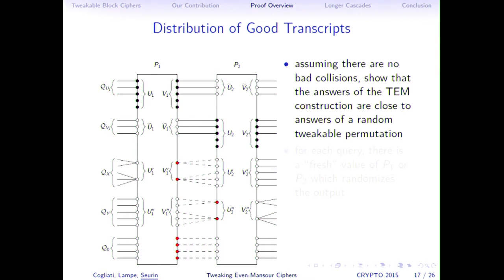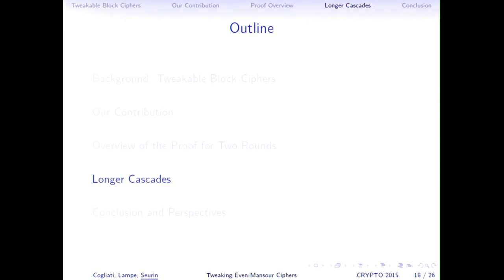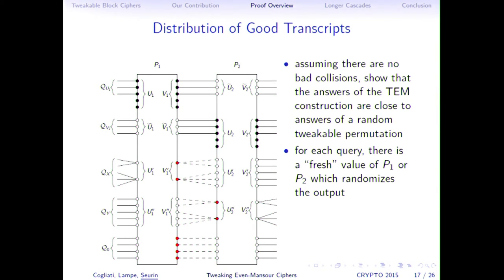The harder part is handling good transcripts: you must show that construction answers for good transcripts are distributed almost like those of a random tweakable permutation. The key idea is that for each query, there will be a fresh value of P1 or P2 that randomizes the output. For example, a construction query might collide with a permutation query at P1, but by the definition of good transcripts it cannot also collide at P2, so P2 randomizes the output. This is a tedious case analysis but essential. Once done, you apply the H-coefficients main lemma and obtain the security bound of 2^(n/3).